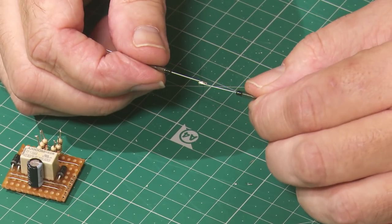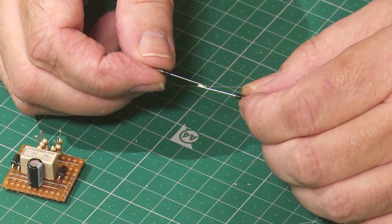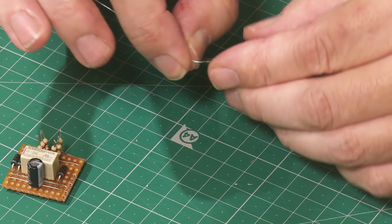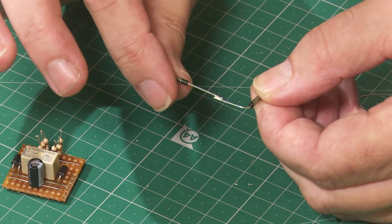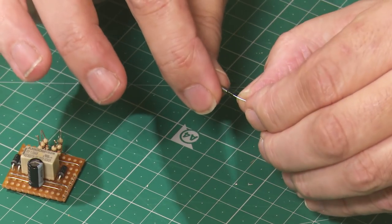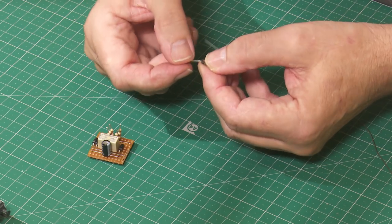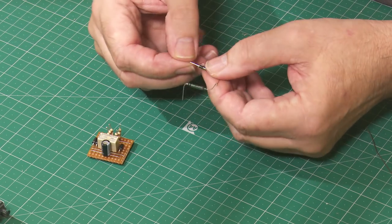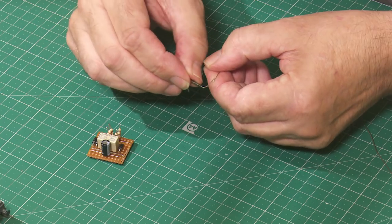The two reed switches are then soldered together, bent through 90 degrees so they're horizontal and then the legs are both bent down ready to be soldered to the circuit board.